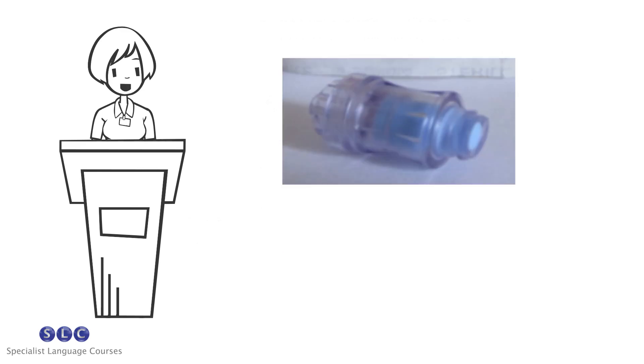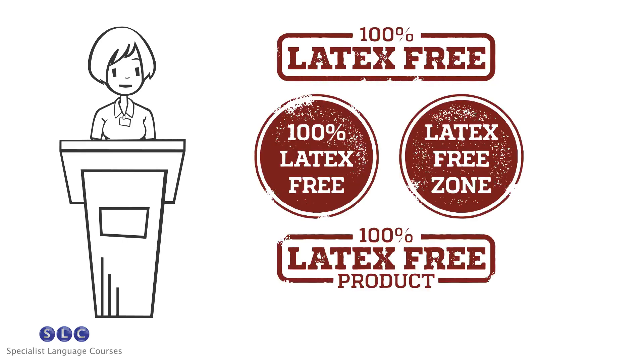The Needleless System, which you can see behind me, replaces needles with a blunt plastic cannula. The blunt plastic cannula is inserted into a split septum access port. It's easy to use because it works in the same way as the old system of inserting a needle into the rubber bung. It requires little staff training.